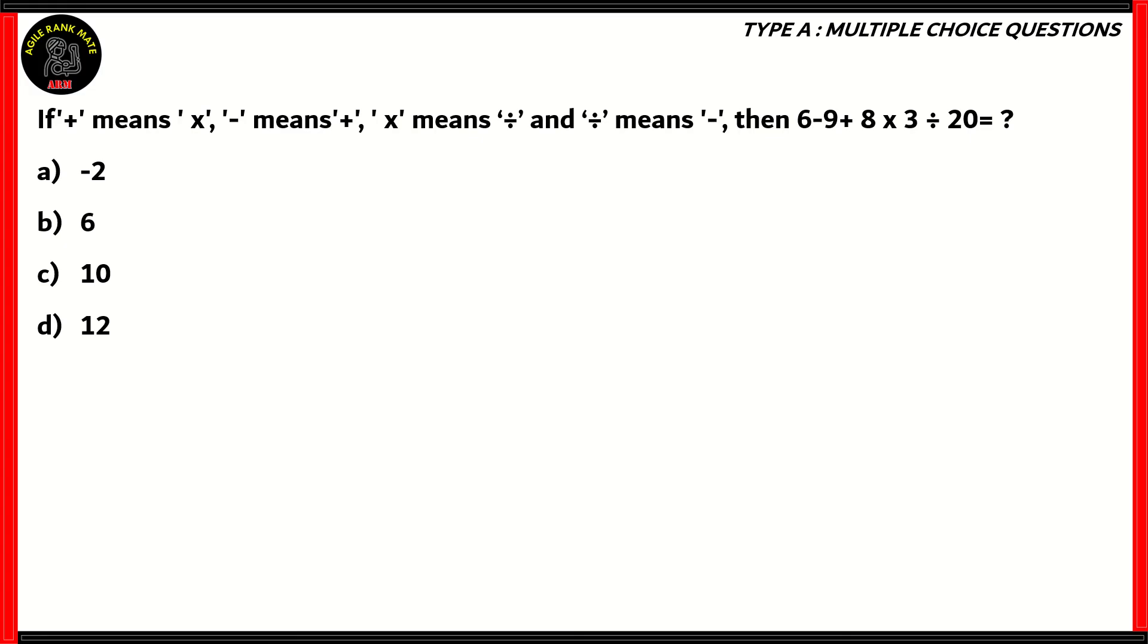Next question: If plus means multiplied by, minus means plus, multiplied by means divided by, and divide means subtracted, then what is 6 minus 9 plus 8 into 3 divided by 20? We need to change the symbols to what they mean in order to solve the actual question.